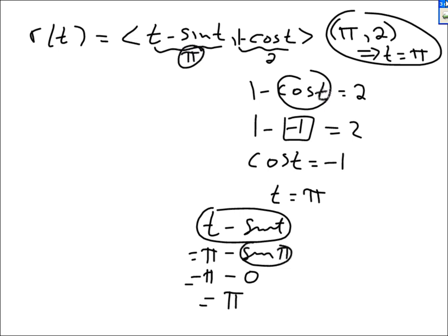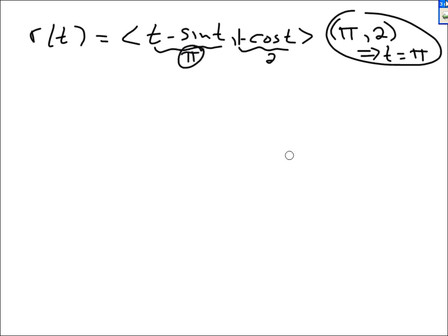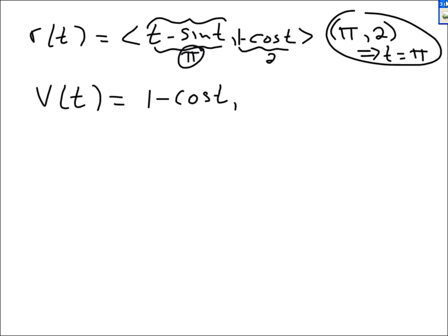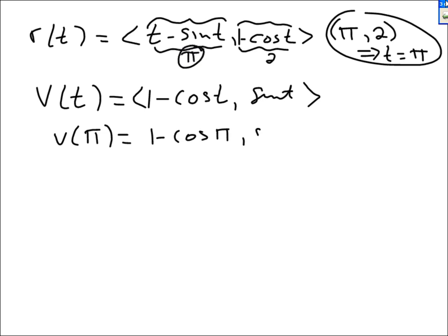Now we know t is π. I have a feeling the t's will not vanish this time when I take the derivative. Taking the derivative of r to get v: the derivative of t minus cosine t is (1 minus cosine t), and the derivative of 1 minus cosine t is sine t. So v of t is (1 minus cosine t, sine t). For v of π: 1 minus cosine of π, comma, sine of π. Sine of π is 0.